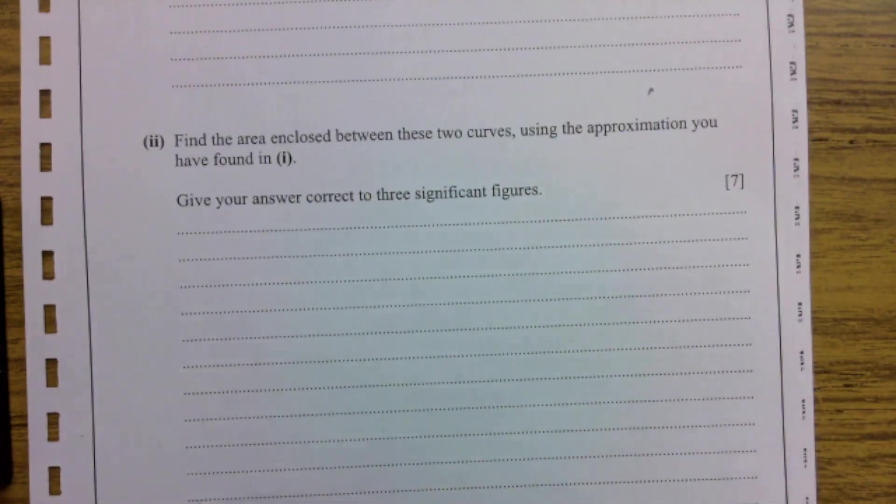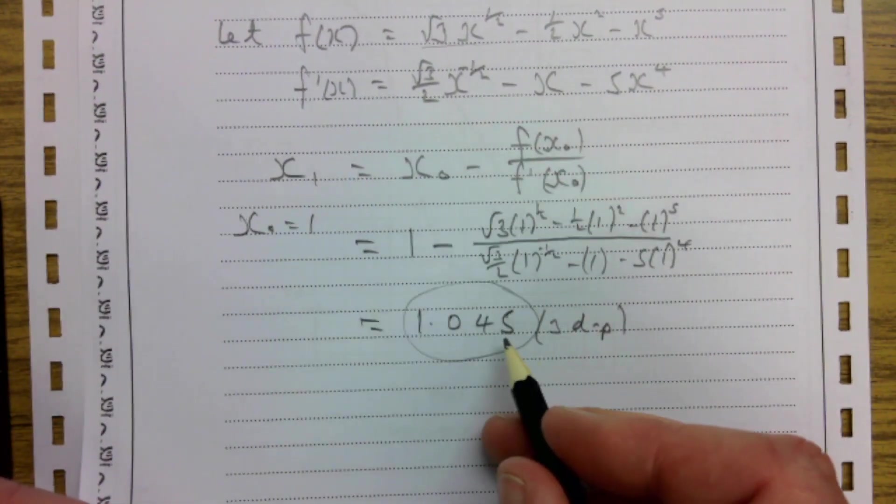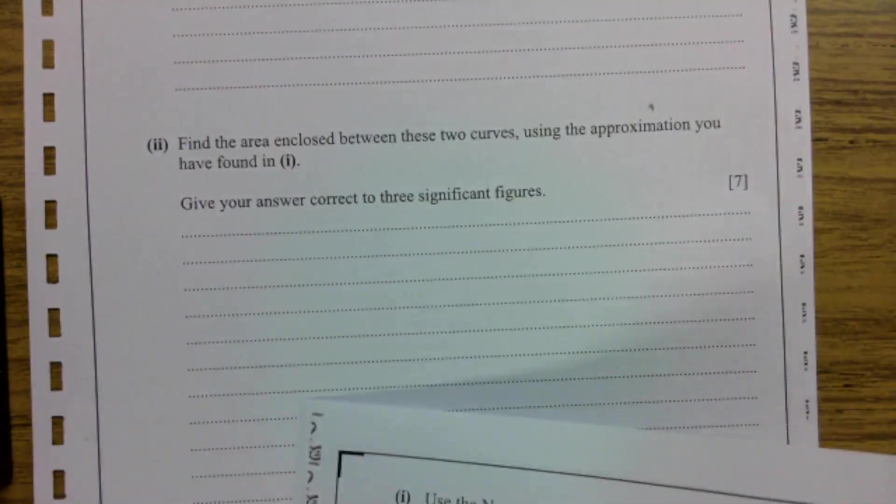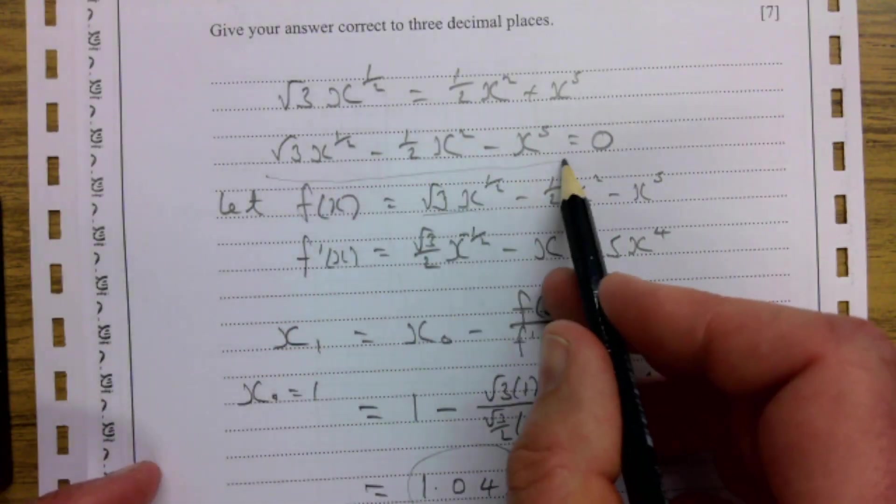Find the area enclosed between these two curves using the approximation you have found in part 1. So the approximation we've found in 1 is this value here. And so that's going to be our limit then of integration, and we need to try and work it out from there. And also I've subtracted those two curves. So it's this here then that I'm going to be integrating.